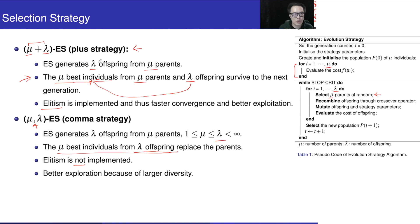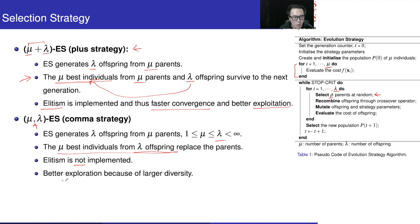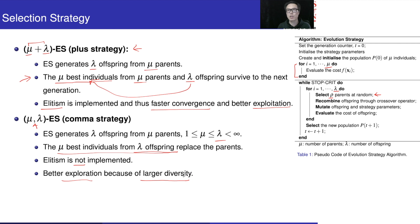The advantage of the plus strategy is that elitism is implemented, so theoretically we have faster convergence because we are doing exploitation — each time we choose the best individual from parents and offspring. The comma strategy has better exploration because everything depends on the λ offspring; even if the parent population is better, we do not consider it, which gives larger diversity.